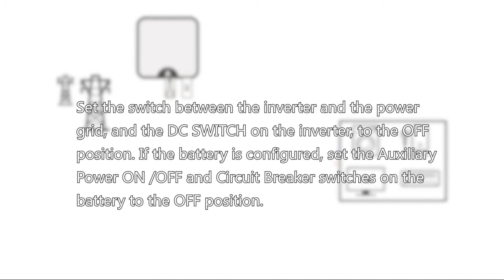Set the switch between the inverter and power grid, and the DC switch on the inverter to the OFF position. If the battery is configured, set the auxiliary power ON and OFF and circuit breaker switches on the battery to the OFF position.